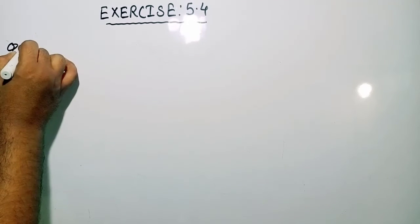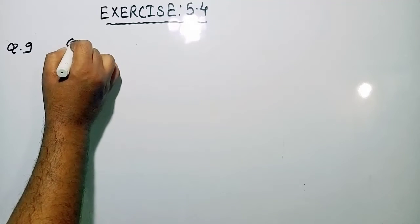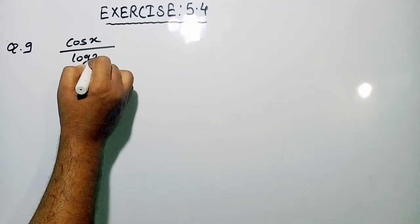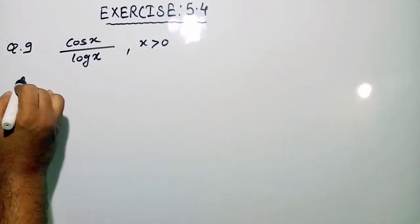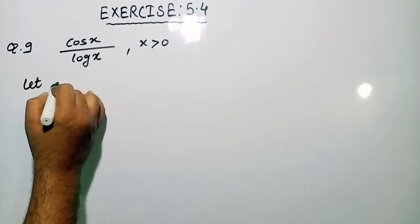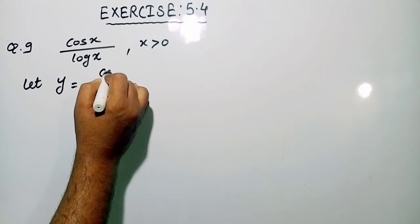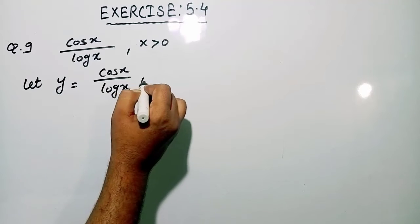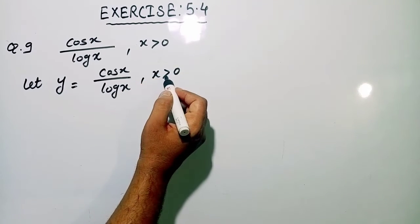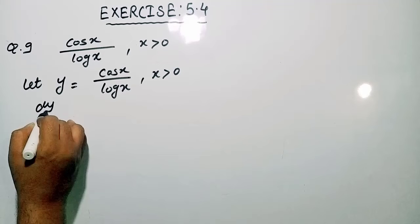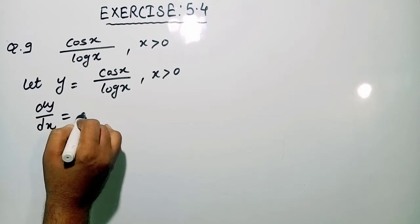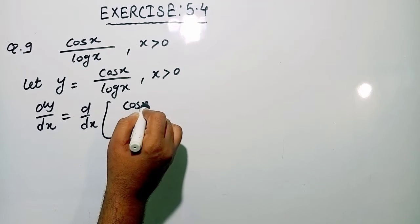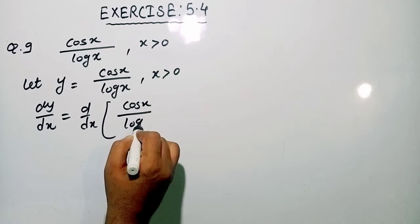Moving to the next question, question number 9: differentiate cos x divided by log x, where x is greater than 0. So let us consider y is equal to cos x divided by log x, where x is greater than 0. Now differentiating with respect to x using the quotient rule, so d by dx of cos x divided by log x.